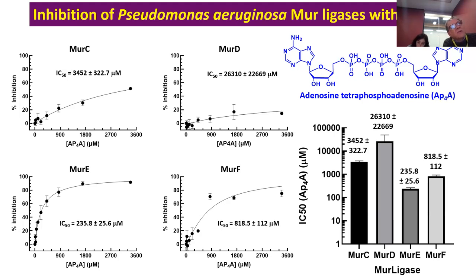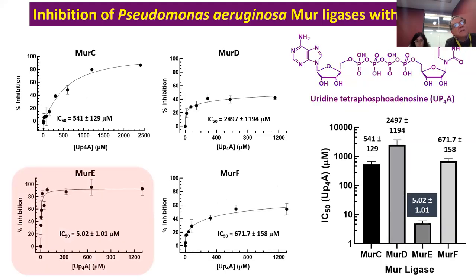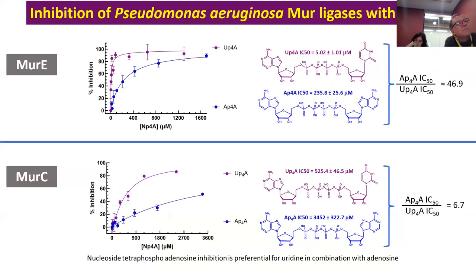The other related molecule available is AP4A with a uridine in place of one of the adenosines. So uridine tetraphosphoadenosine (UP4A) turned out to be considerably more potent — against MurE it generates an IC50 of 5 micromolar. MurC was also more sensitive to this molecule, which has an adenosine at one end and a uridine at the other. Making comparisons, the substitution of uridine for adenosine in AP4A reduces the IC50 about 47-fold for MurE and about 7-fold for MurC.